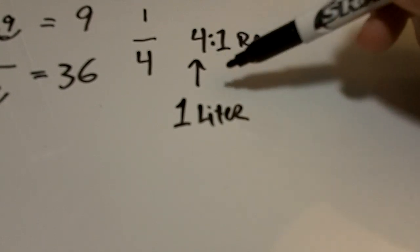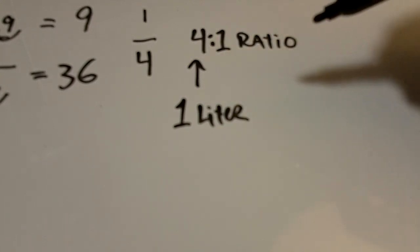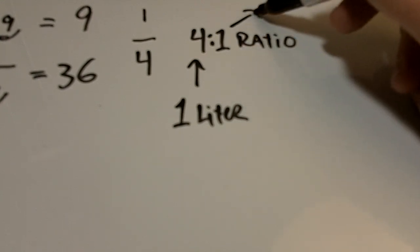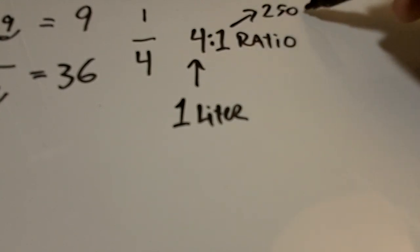So we know in a 4 to 1 ratio if our 4 is 1 liter then our 1 is going to be a quarter of that liter since it's a 1 to 4 ratio. So our 1 is going to be 250 milliliters. That's the answer to the question.